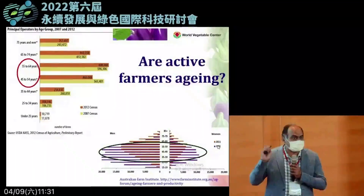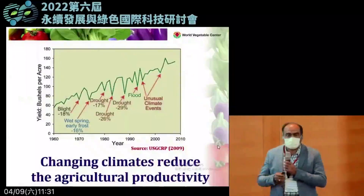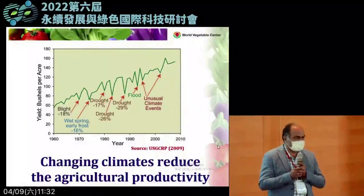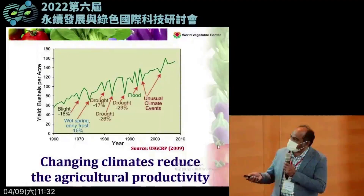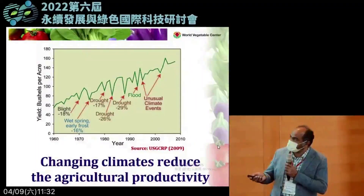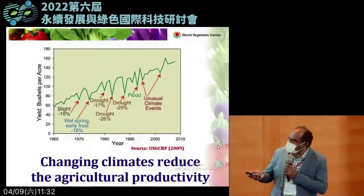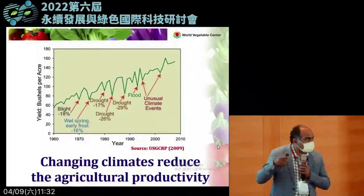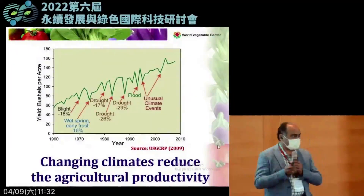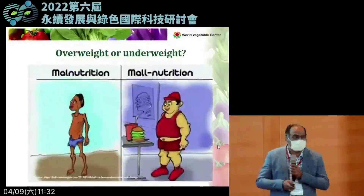The average age of an Indian farmer is 50 years, meaning at least two generations are going away from agriculture. This is a significant threat for global food security in the years to come. And last but not least, changing climate and global warming — extreme drought, heavy downpours and resulting floods, and pest and diseases linked to climate change can all significantly pull down yields.